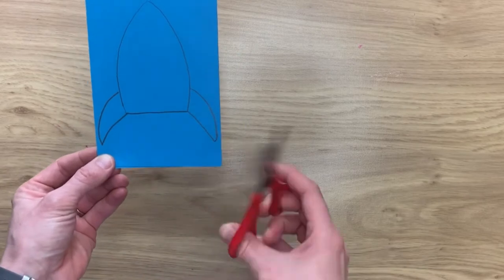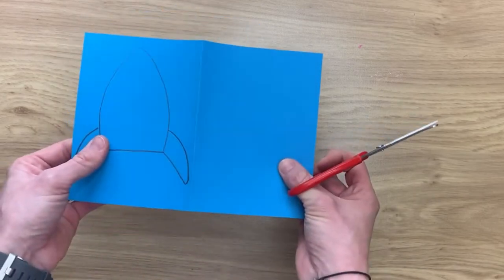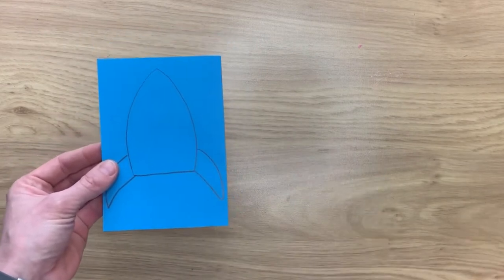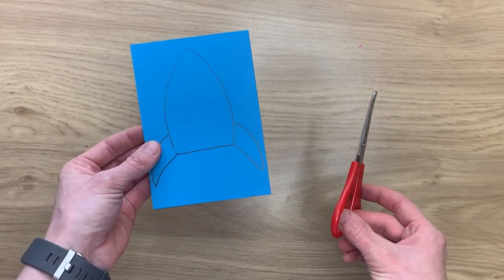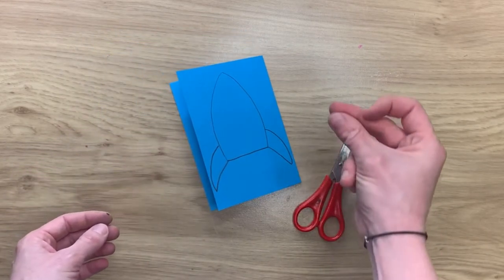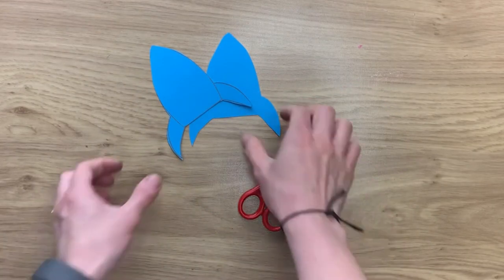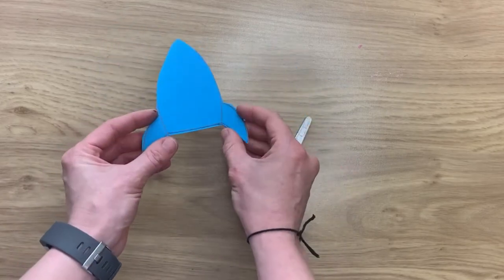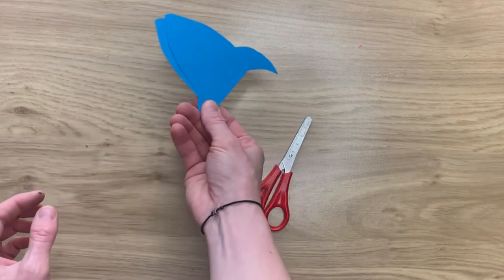Now the next thing to do is to cut that out. The reason I've folded it in half is so that you can cut it and you'll end up with two identical rockets. So we will cut that out now and there you have it. We've got two identical rockets that when they're stuck together they will match up perfectly.